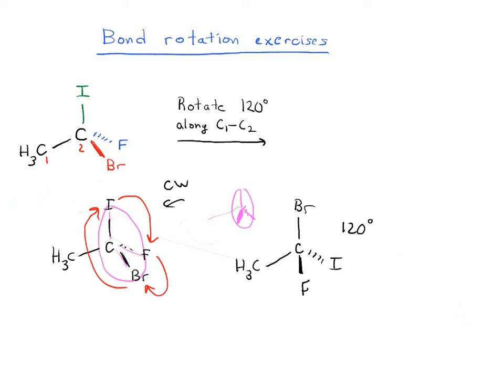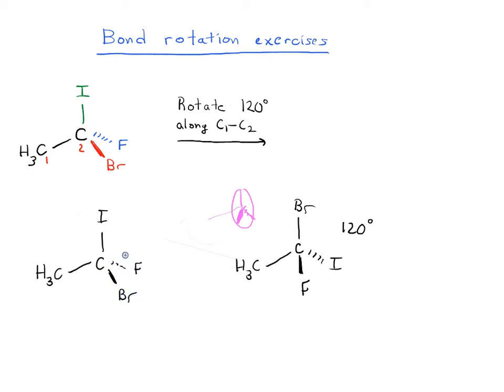So now what happens if we do the rotation in the opposite direction? Let's just redraw everything and let's try doing this bond rotation in the opposite direction. So CH3C, and then we have the I, the BR, and the F. Now we're going to do the rotation in the opposite direction, so we're going to do it counterclockwise.